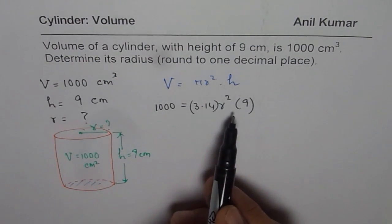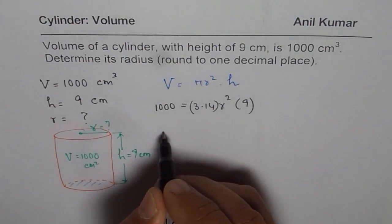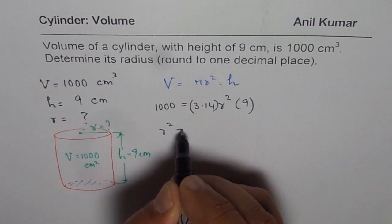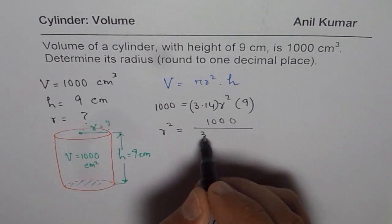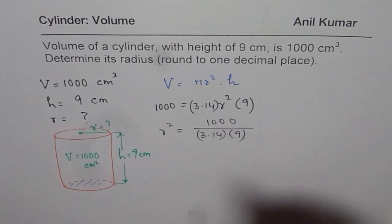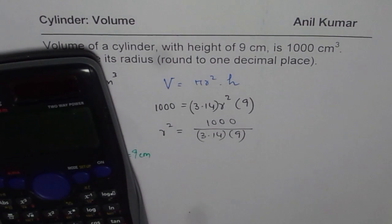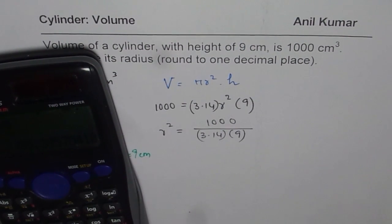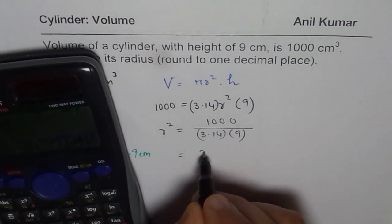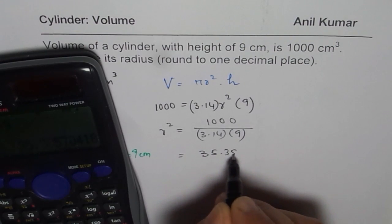Now you can rearrange the formula. So we get radius square equals to 1000 divided by 3.14 times 9. So that is how we can actually find the radius square. So we have 1000 divided by 3.14 and then we can divide by 9.